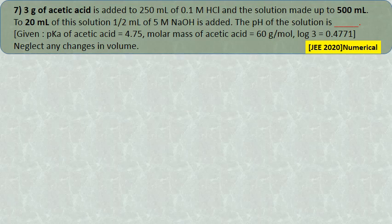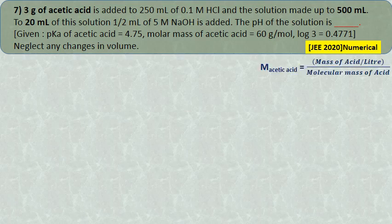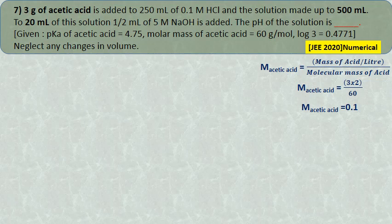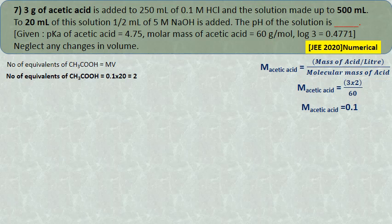Molarity of acetic acid: 3 grams in 500 mL, so 1000 mL contains 6 grams; 6/60 = 0.1 molar. In 20 mL of the mixture, equivalents of acetic acid = 0.1 × 20 = 2 equivalents. HCl concentration after dilution from 250 mL to 500 mL is 0.05 molar. Equivalents of HCl in 20 mL = 0.05 × 20 = 1 equivalent.